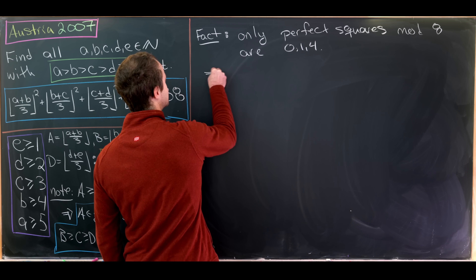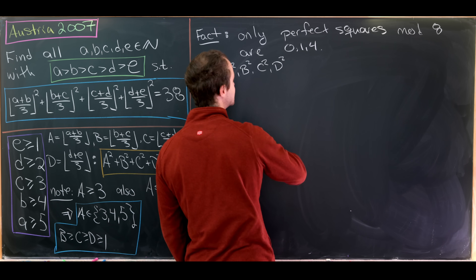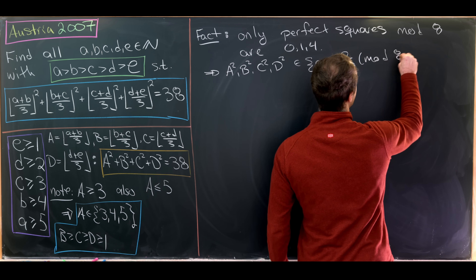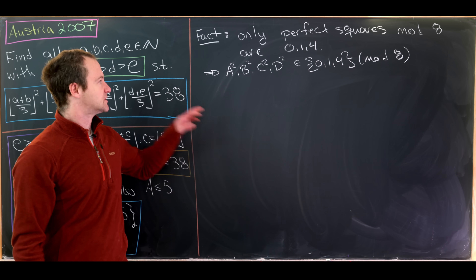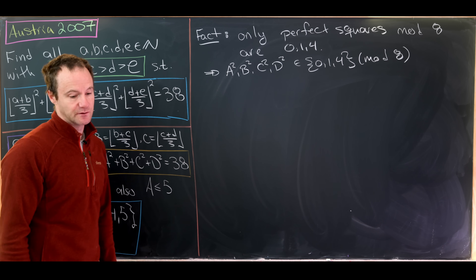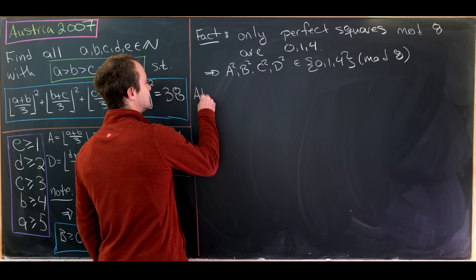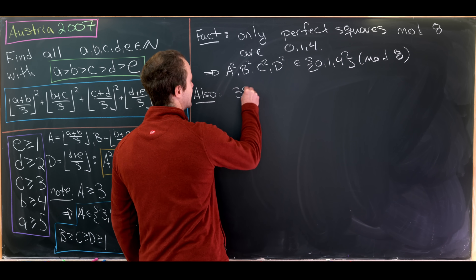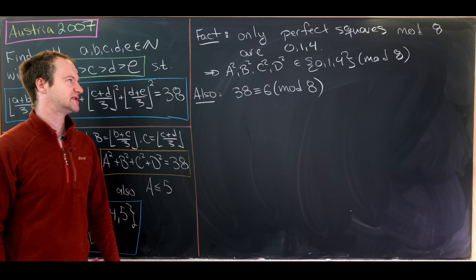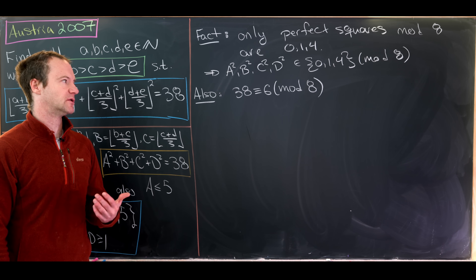That means A², B², C², and D² must each come from the set {0, 1, 4} mod 8. Let's also notice that 38 is congruent to 6 mod 8, since 38 = 32 + 6 and 32 is a multiple of 8.